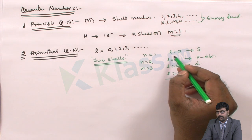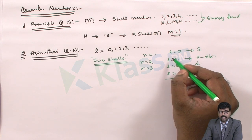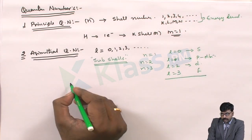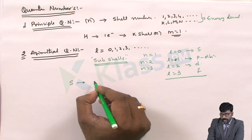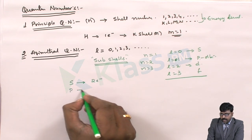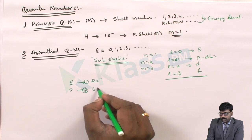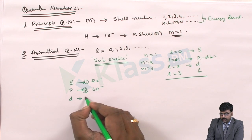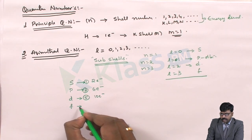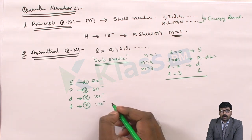In the S sub-shell, there is 1 orbital and it can accommodate 2 electrons. In the P sub-shell, there are 3 orbitals and it can accommodate 6 electrons. In the D orbital, there are 5 orbitals and it can accommodate 10 electrons. In the F sub-shell, there are 7 orbitals and 14 electrons can be accommodated.